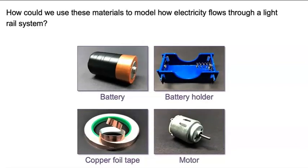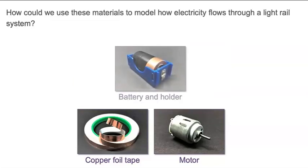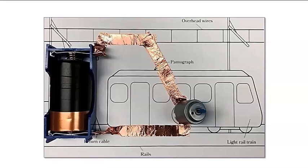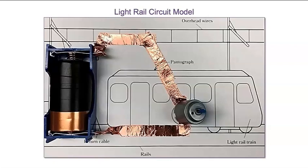How can we use these materials to model how electricity flows through a light rail system? The substation is the source of electrical energy — the battery can represent the substation. We can place the battery inside the battery holder. And this motor can represent the train's motor. I use the copper foil tape to make strips that create a closed circuit from the battery to the motor and back to the battery. This is a light rail circuit model. I put a piece of tape on the motor so we can see it move more easily.